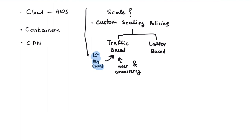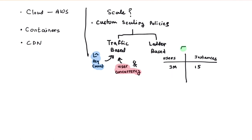You can add multiple policies for scaling, and Hotstar typically does pre-warming of instances — provisioning instances in advance, then using traffic-based policies to scale dynamically. They also have a ladder-based policy based on number of concurrent users mapped to number of instances required, derived from benchmarking and performance analysis. For example, 3 million users might require 15 instances, and 5 million users might require 25 instances.